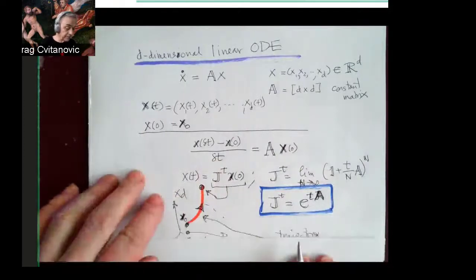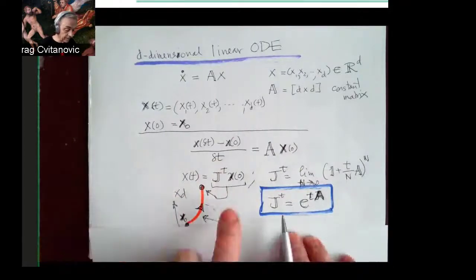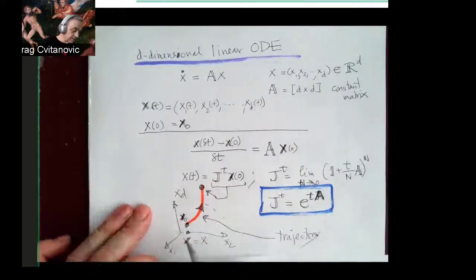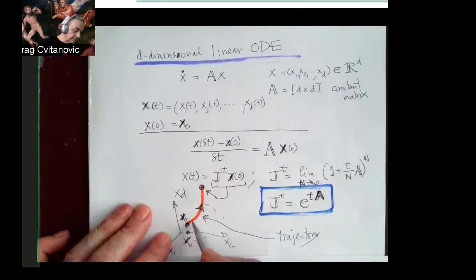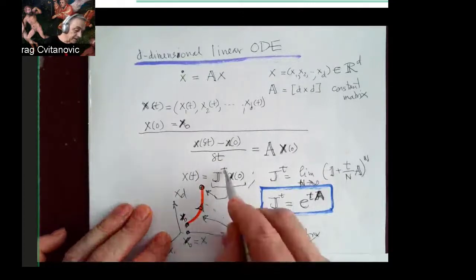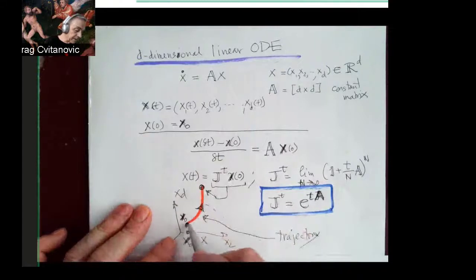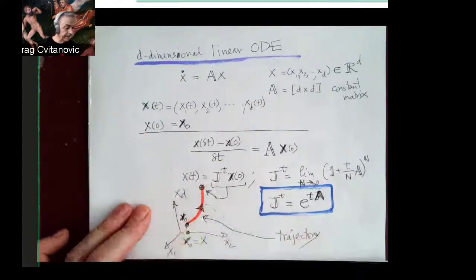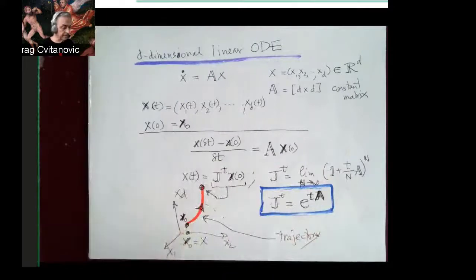So it says that the solution is original point starting here in D-dimension. For every little step, it's advanced along a trajectory. And at time T, obtain my answer by multiplying by matrix, and I get the value at time T. So this solves a linear differential equation.